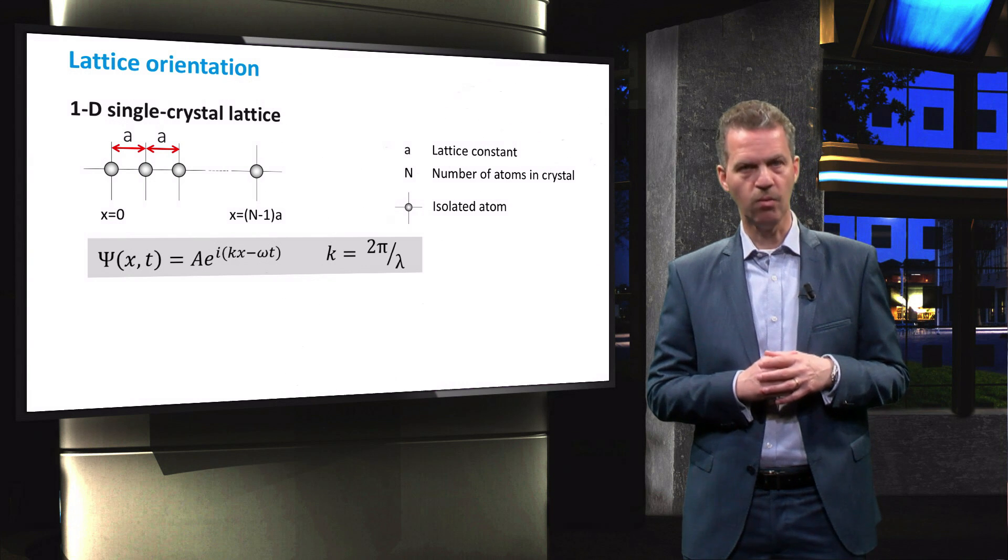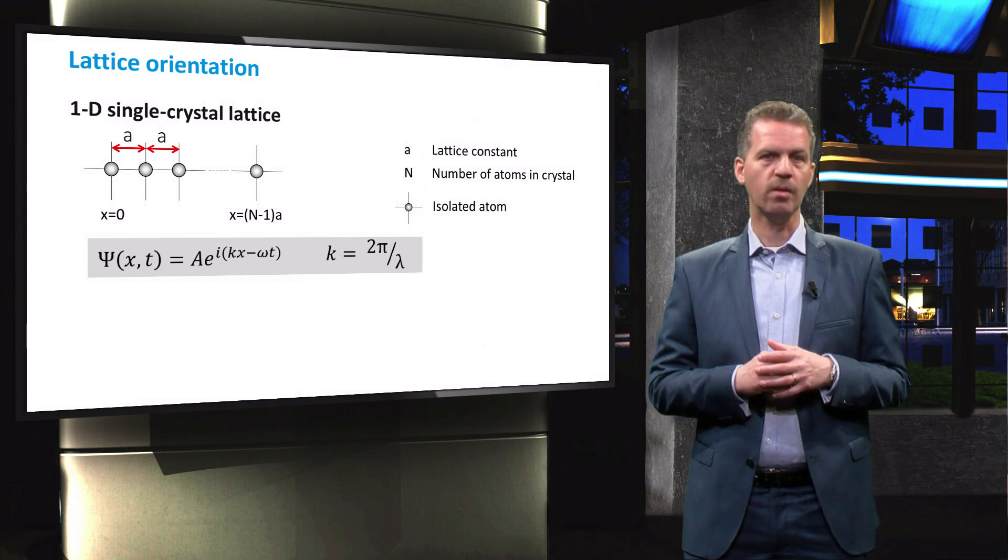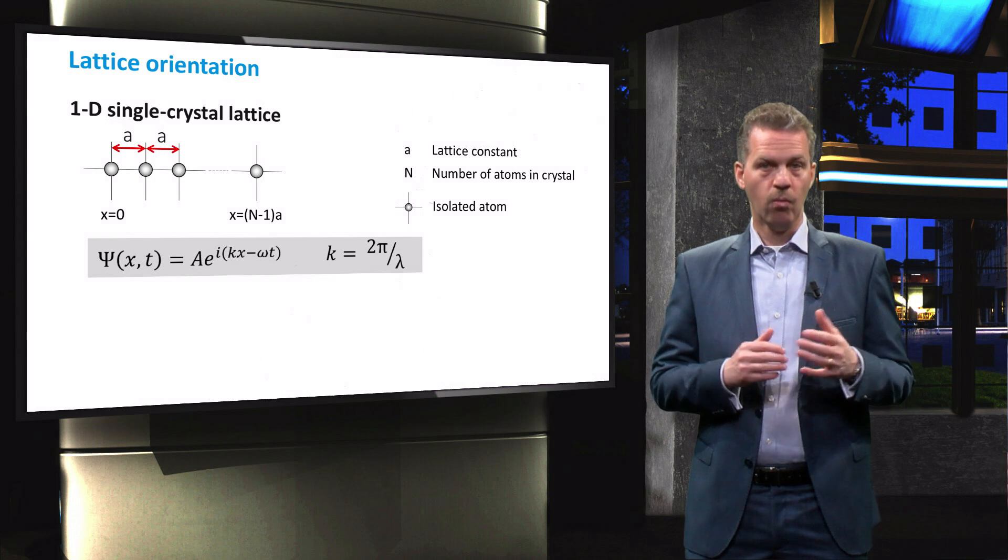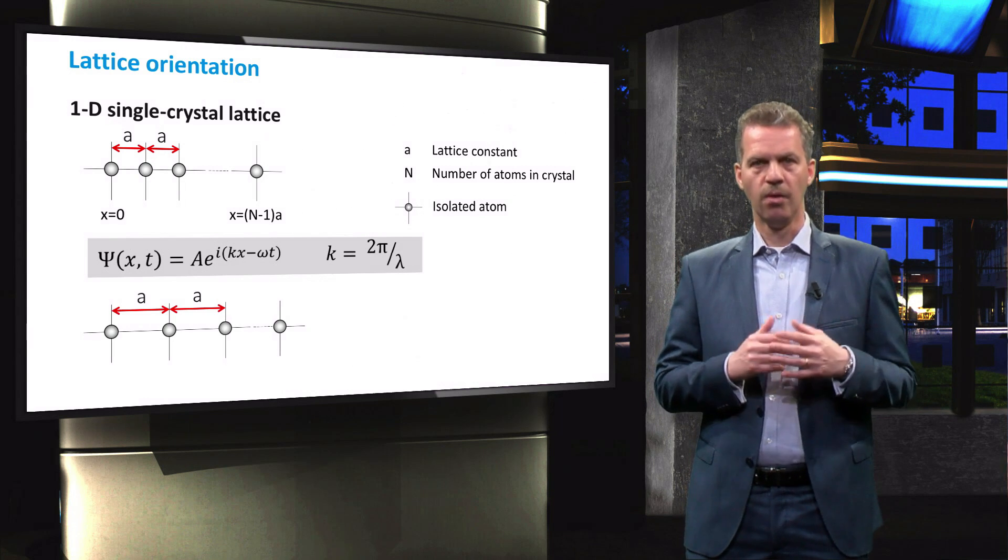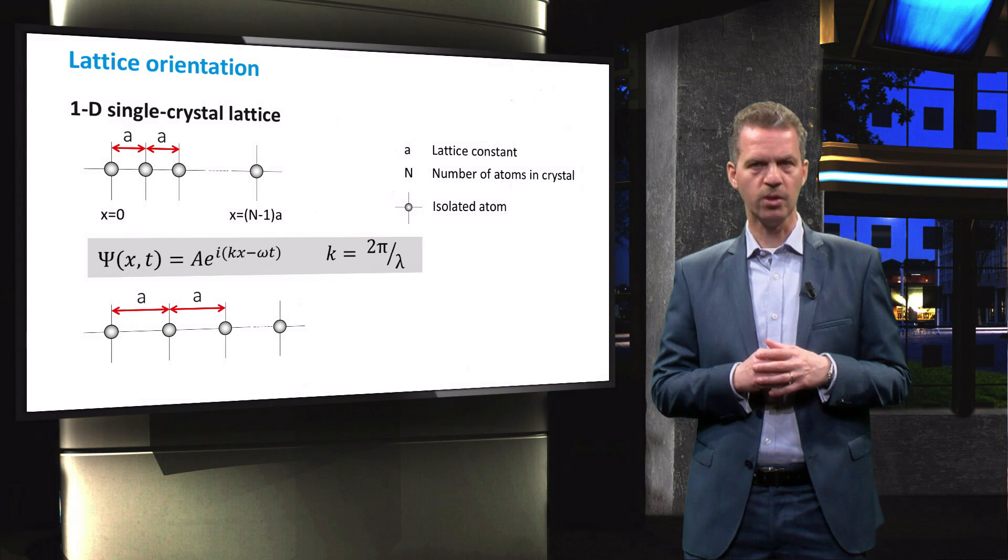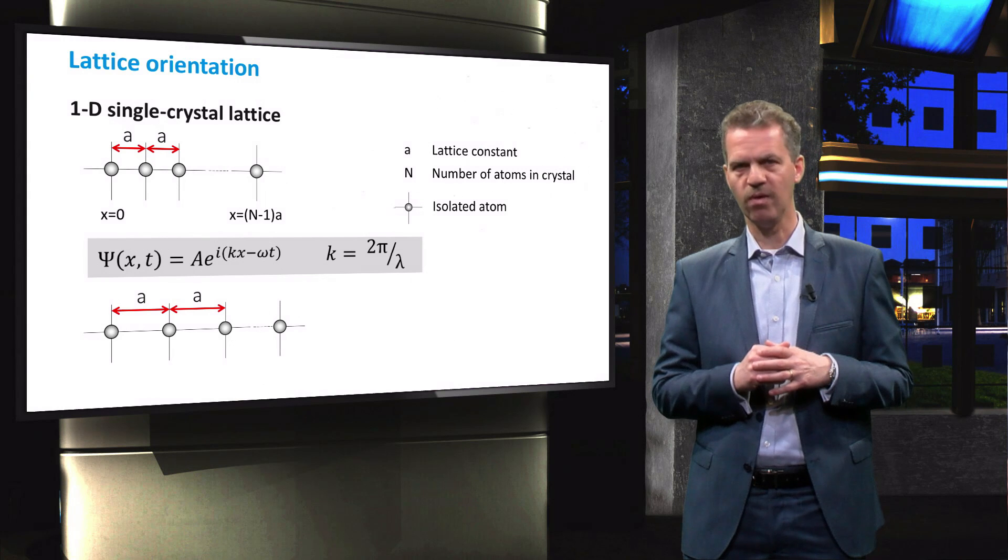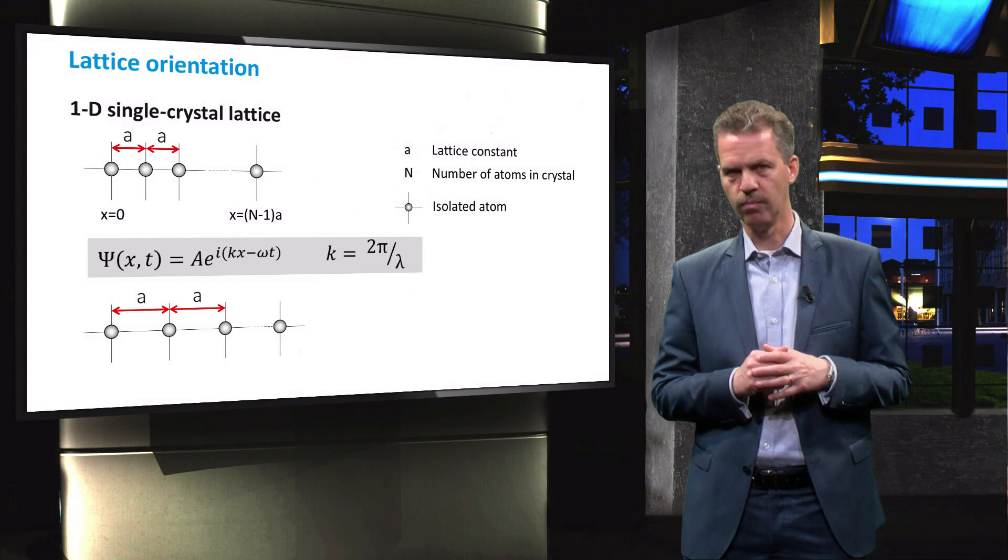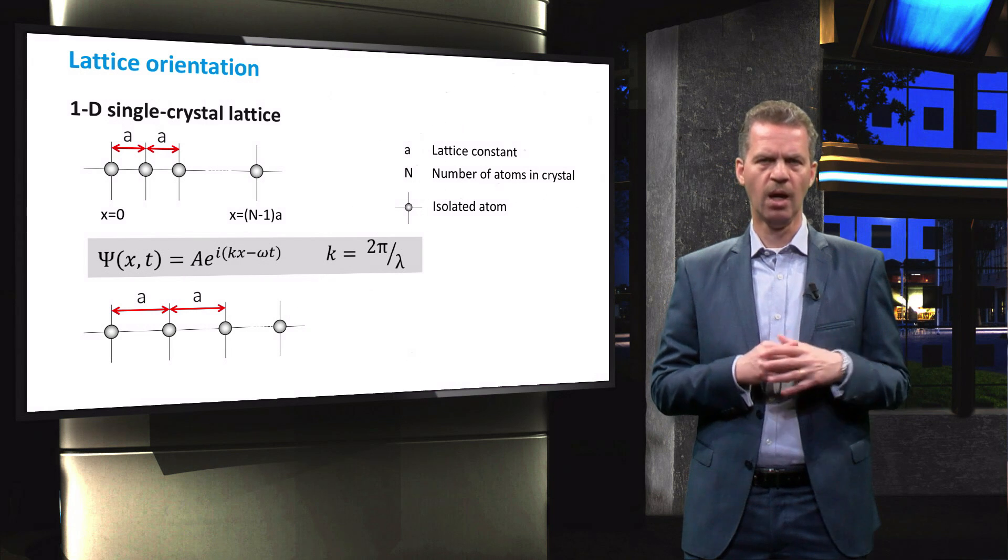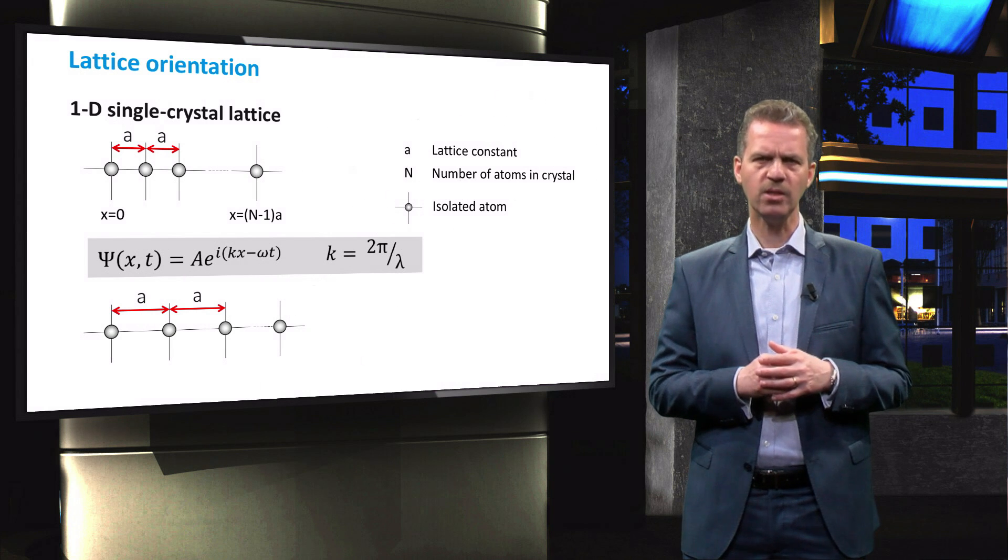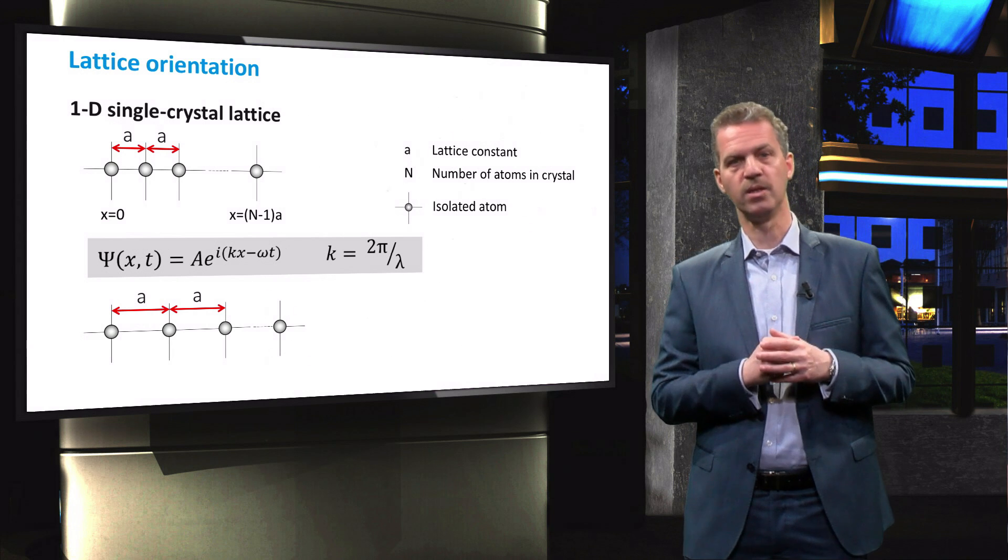with k the wave factor in units of inverse length. This function is called a Bloch wave. We can clearly see that by increasing the atom spacing, the wave factor of the wave solution cannot be constant, but should decrease as the wavelength needs to increase. Now that we have seen the solution in one dimension, you can imagine that k will also be affected by the atomic arrangement in three dimensions.